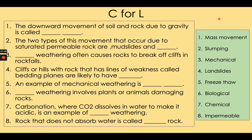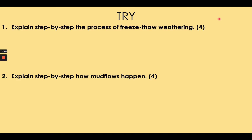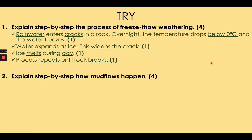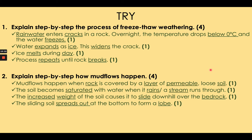Now we need to really embed this learning by practising it. I'm going to show you a couple of questions — please answer them using the understanding you've gained from this lesson. For freeze-thaw weathering, explain step by step how ice leads to rocks breaking. For the second question on mud flows, you should have used the word permeable. Please mark your answers, add any corrections in green, and give yourselves a score out of the total. If you've got seven or more, you've really understood this lesson — well done.